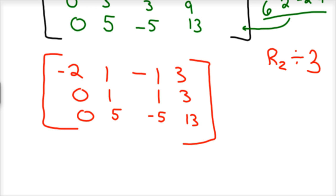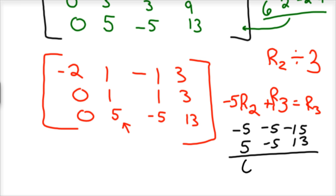So now, I need to make a 0 here. And so we'll take row 2 times negative 5, and add that to row 3, to end up with another row 3. So if you do that, you'd have negative 5, negative 5, negative 15. And then for row 3, we're going to add that to row 3, 5, negative 5, and 13. So let's add that up. Well, that's 0, negative 10, and negative 2.